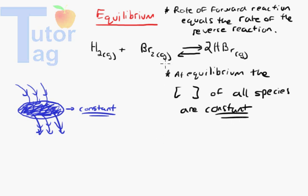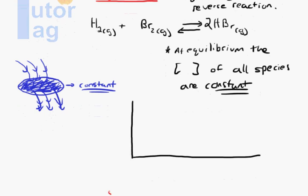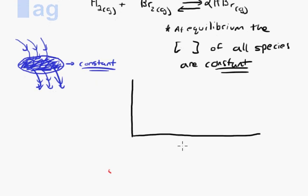We can also look at this state of equilibrium as a graph. On the x-axis you have reaction progress, and on the y-axis you have concentration.